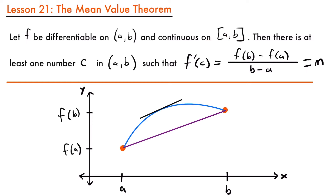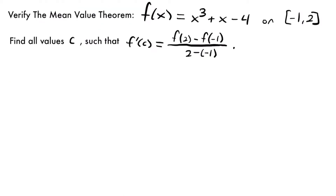If we look at a function on some interval from a to b, and it is differentiable and continuous on the interval, then we can be sure there is going to be at least one number c on that interval where the slope at that point equals the slope between our endpoints. Let's look at an example and verify the theorem works for the function f(x) = x³ + x − 4 on the interval from negative 1 to 2. We want to find all values of c such that f′(c) equals the slope between our endpoints. Remember the derivative is the slope of a function at any particular point, so plugging in c gives the slope at that point.